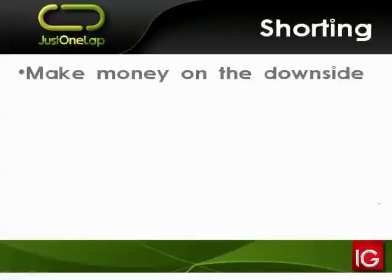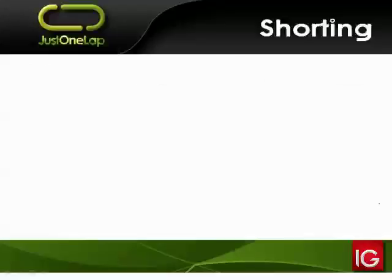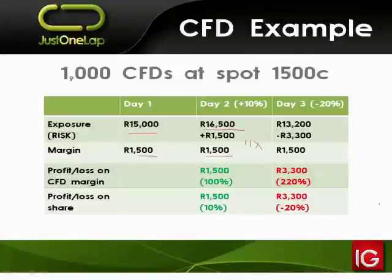Shorting — making money on the downside. Markets mostly go up, but they do go down. We saw what happened in 2008-2009: that was a 50% decline. Even within broader moves, certain stocks are in downtrends and others in uptrends. You want to make money in both directions. CFDs allow you to make money on the downside.